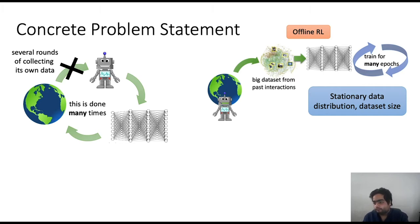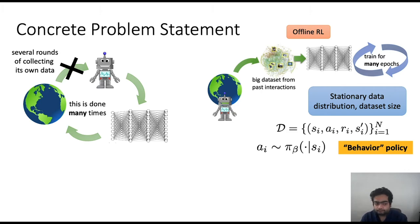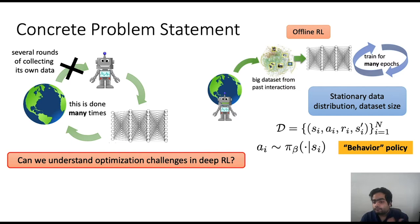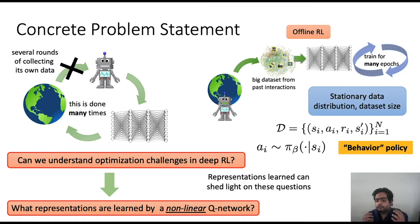This is also known as the offline reinforcement learning problem setting. The data set is formalized as a sequence of transitions taken by a behavior policy in the environment, which is not the same as the learned policy. To understand what optimization challenges exist in offline deep RL, we consider the representations learned by a non-linear deep Q-function, since the quality of representations will be indicative of what kind of solutions the optimization process prefers.